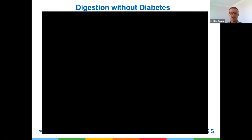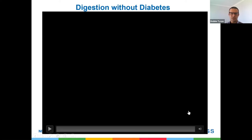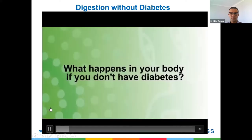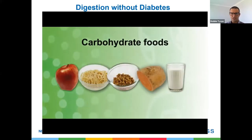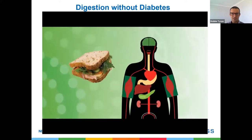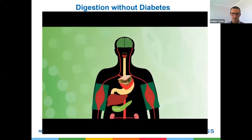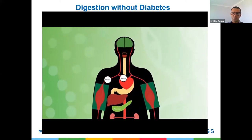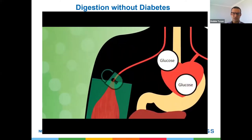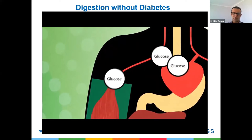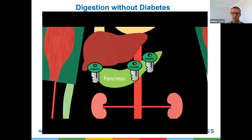First of all, we're going to do a refresher on the digestion that occurs in the body when someone doesn't have diabetes. Carbohydrate foods are the main fuel source for the body, such as starchy vegetables, pastas, and grain foods such as bread. It's broken down in the stomach, glucose is released and enters the bloodstream. The body recognizes this and sends out appropriate amounts of insulin to unlock the cells and let the glucose into the muscle cell to be converted to energy and used by the body.